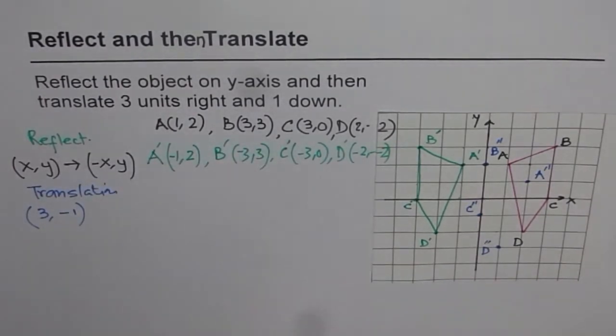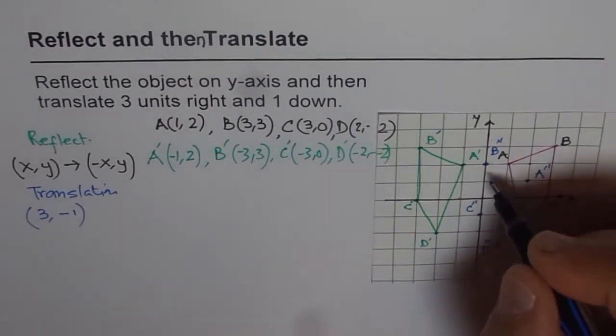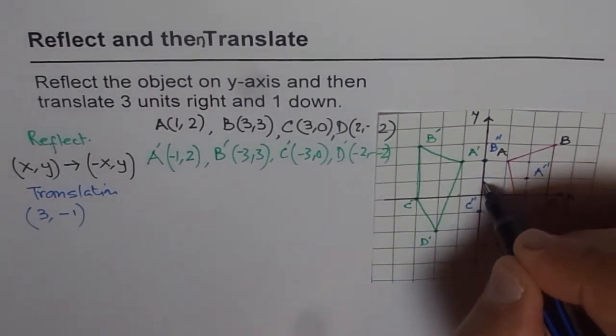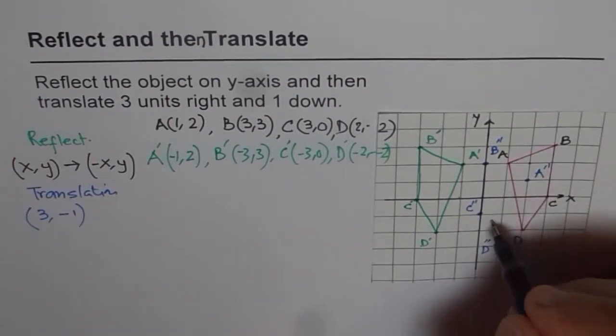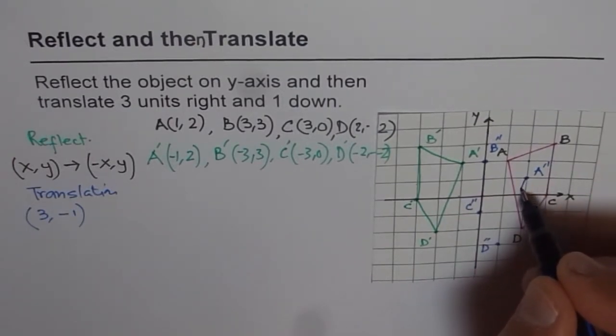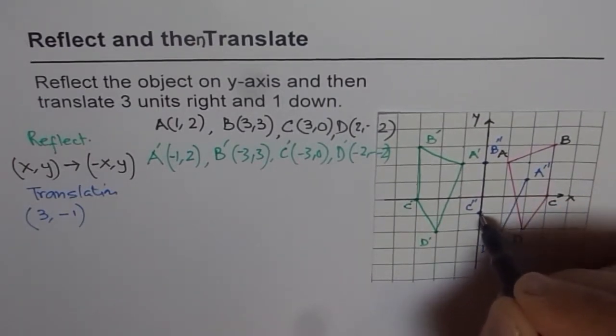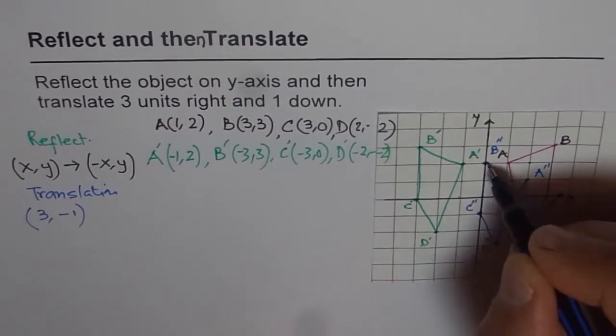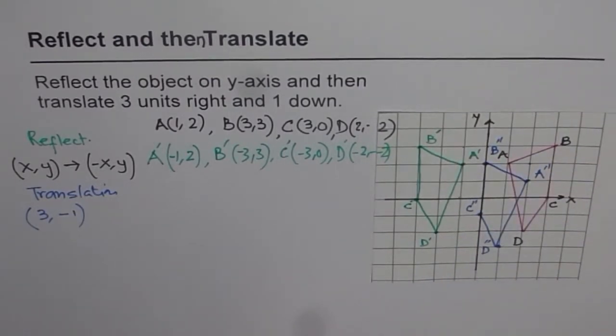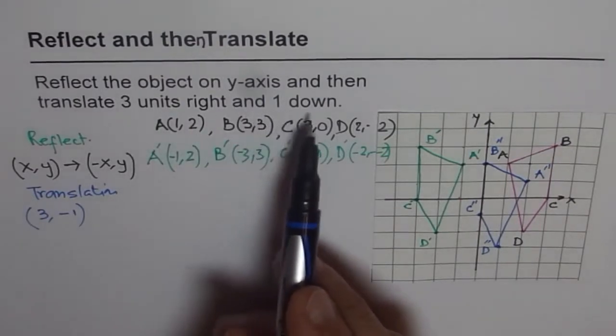And the translation is three units right, one down. So when we say three units right and one down, we can write as (3, -1), three for X and minus one for Y. Three right, one down. Let's join this.